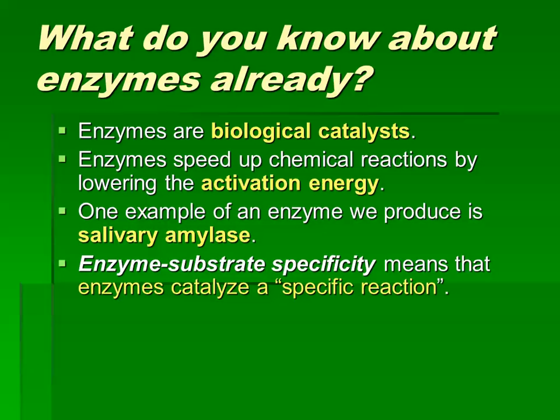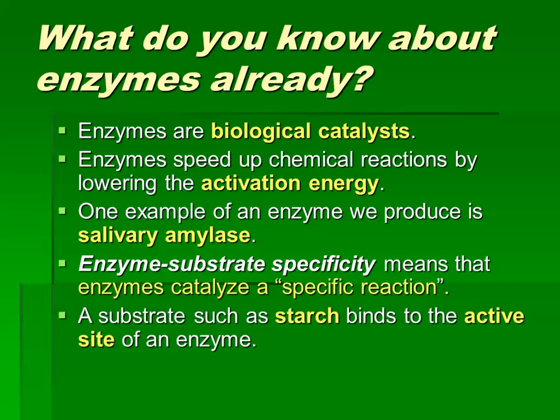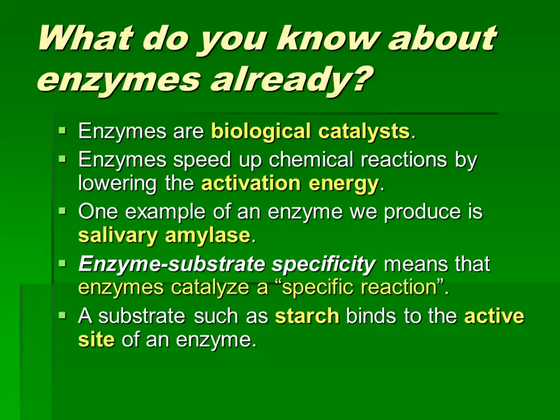Some things, most things that are poisons actually interfere with enzymes by binding to places where they shouldn't bind, but they actually just happen to have a very similar shape to the substrate the enzyme is supposed to bind to. So for salivary amylase, the substrate is called starch, and it binds to the active site of the enzyme salivary amylase, and that gets broken down into maltose.